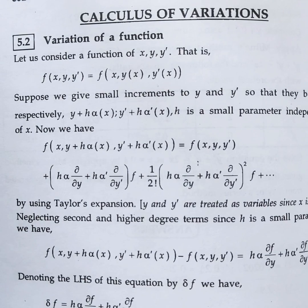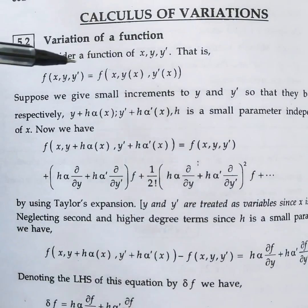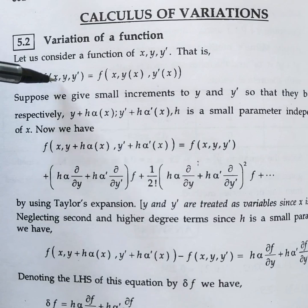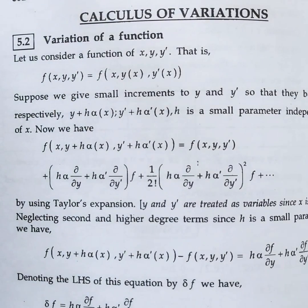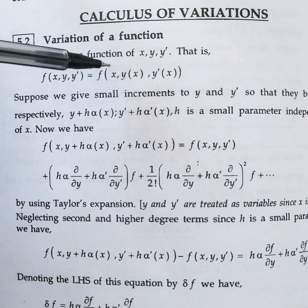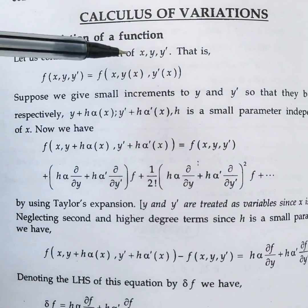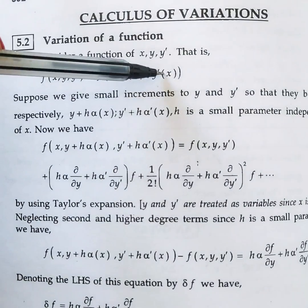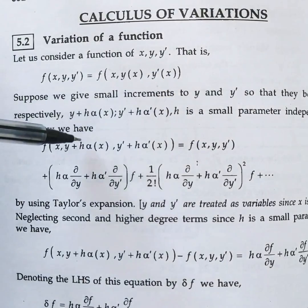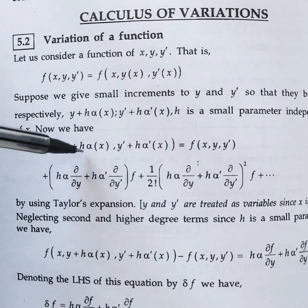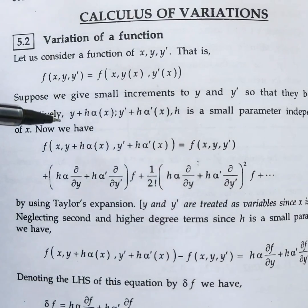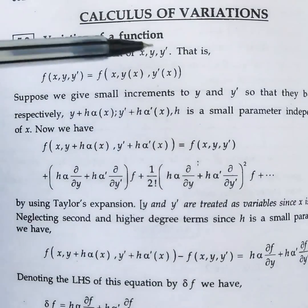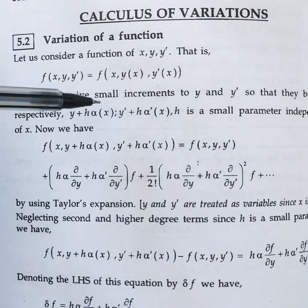First of all let us see what we mean by function. If we take f of x, y, y dash — it is a function in x, y, and y dash. Now imagine that we are giving a small increment to y and y dash. We will write this as x comma y plus h into alpha of x, comma y dash plus h into alpha dash of x. This y and y dash is again a function of x.